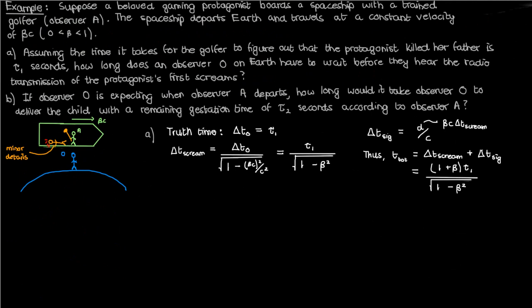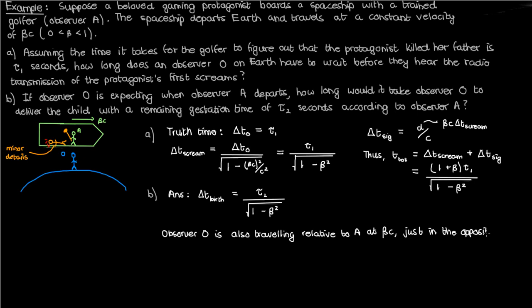For Part B, observer O is pregnant when observer A departs. The answer isn't simply tau_2 even though observer O is in the stationary reference frame. Relative to observer A, observer O is moving at beta*c in the opposite direction — so according to A, observer O is a moving clock that runs slower. Therefore the time for observer O to give birth in A's reference frame is delta_t_birth = tau_2 / sqrt(1 - beta²), dilated just as delta_t_scream was dilated in O's reference frame.